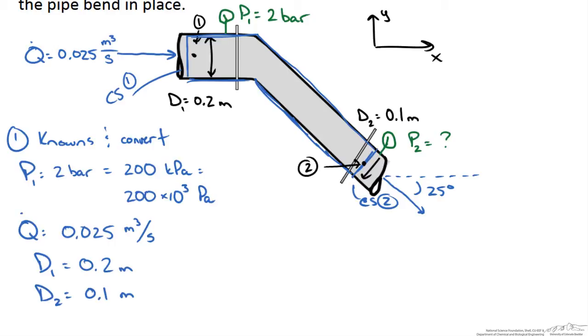We can quickly determine the velocities at these points because the average velocity at point 1 is just the volumetric flow rate over the cross sectional area.